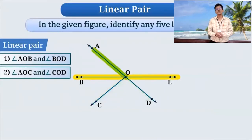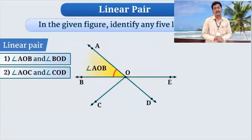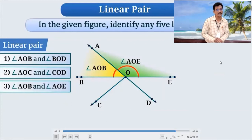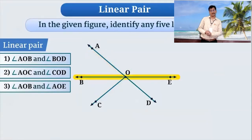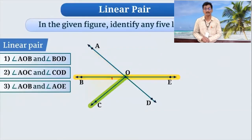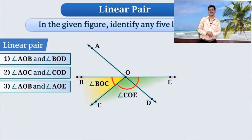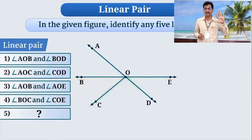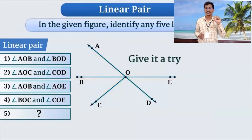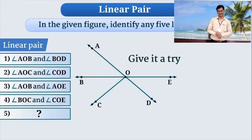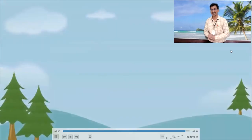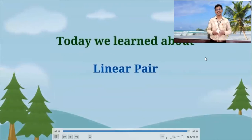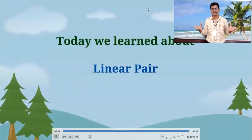Now fourth one. Because of common arm OC, Angle BOC and COE is also linear pair. What about fifth? What about fifth angle linear pair? Dear students, you should try it. Okay? You try. And in today's video, we learned about linear pair. Thank you, dear students.